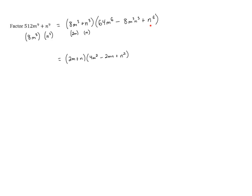And then we also can't forget this other factor. So we also have a factor of 64m to the sixth minus 8m cubed n cubed plus n to the sixth. And now we've broken down everything that we can and so this becomes our final answer.